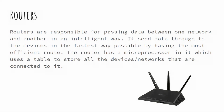Routers are something you'll have at home. A router transmits data around your network in a smart way — it knows every device connected to your network and passes packets of data to the correct devices. A router's responsibility is simply to connect two networks: your LAN, your local area network with all devices in your home, across to the internet — joining those two networks together.